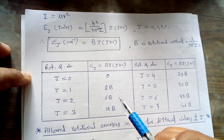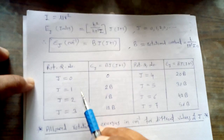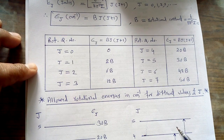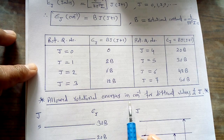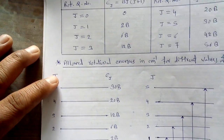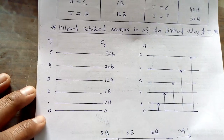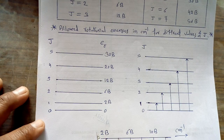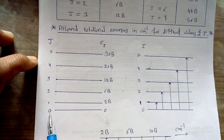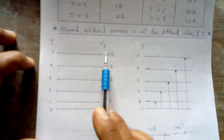In this way we may calculate the rotational energies in per centimeter for various rotational quantum numbers J for a rigid diatomic molecule. These are the allowed rotational energies in per centimeter for different values of J. We study these using simple figures in which different values of J — starting from 0, 1, up to J = 5 — and their respective rotational energies ε_J in per centimeter are shown.